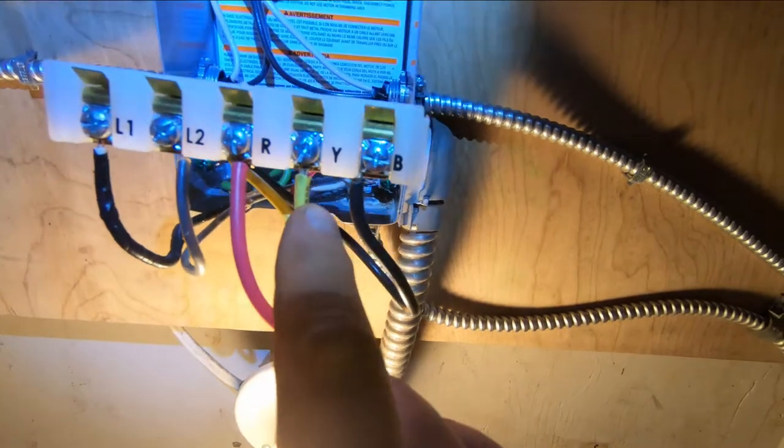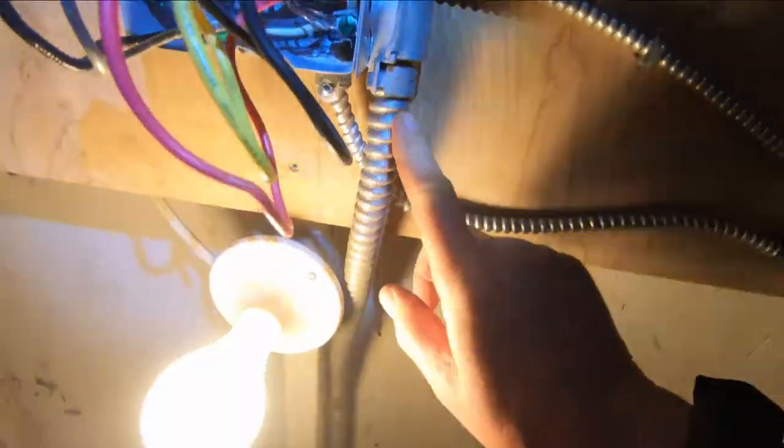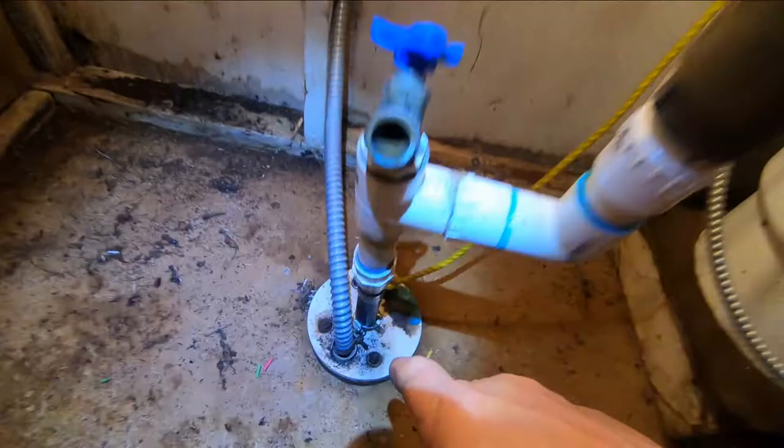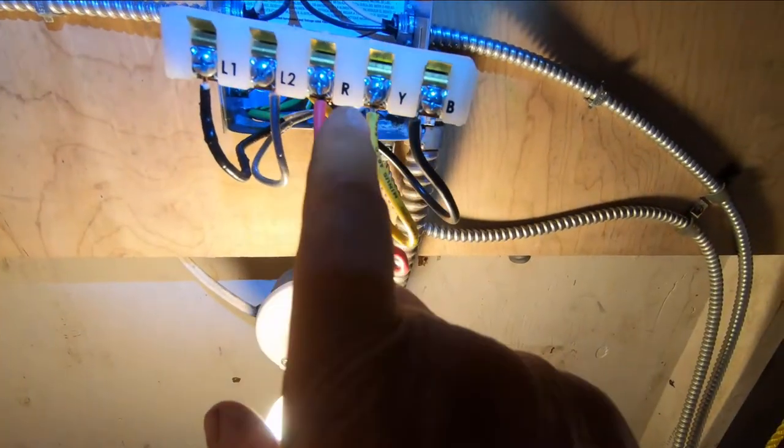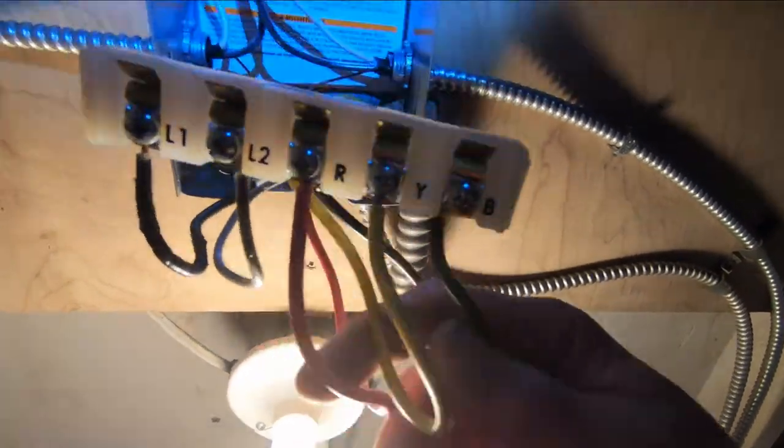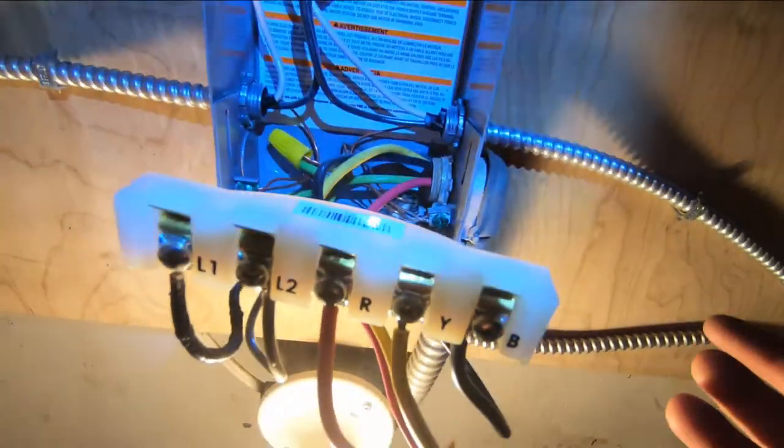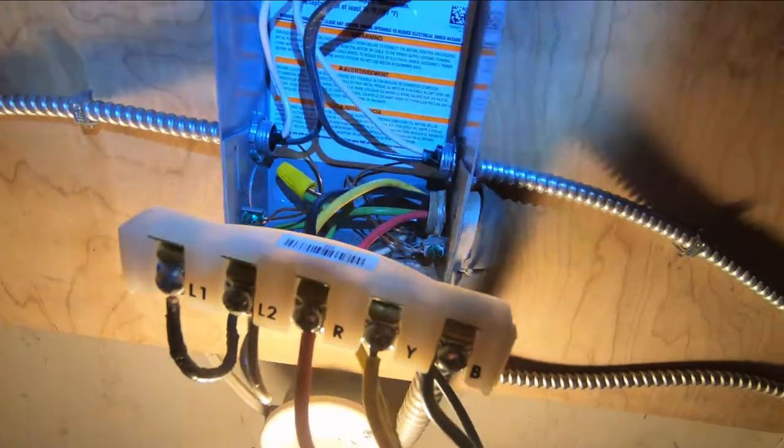They go down to the pump. This is the start, common, and the run, and it's grounded in there. That's all there is for connections in there. So four wires going into here was a little confusing.